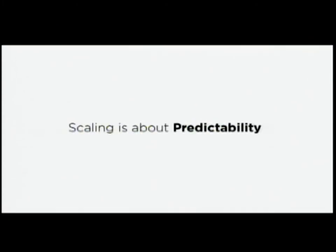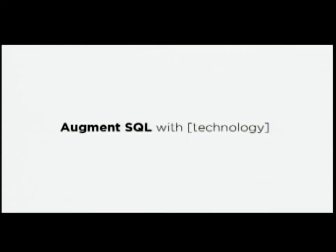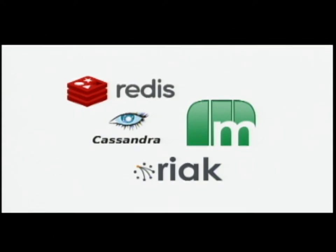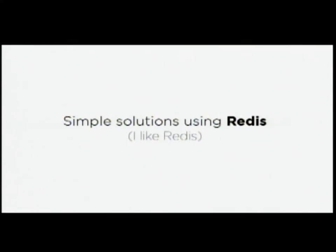The one thing I want you to think about is that scaling is just about predictability — knowing how the system is going to react and how it can grow. We can fix the SQL problem by augmenting it with various technologies. My favorite is Redis. We use Redis for so many things at Disqus, and a majority of Sentry runs on Redis. There's also Memcache and up-and-coming technologies like Cassandra. But today I'm just going to talk about solutions using Redis because it's the easiest technology you can imagine. Everything's a simple data structure — a list, hash, set, or counter. It requires very little knowledge to get started.